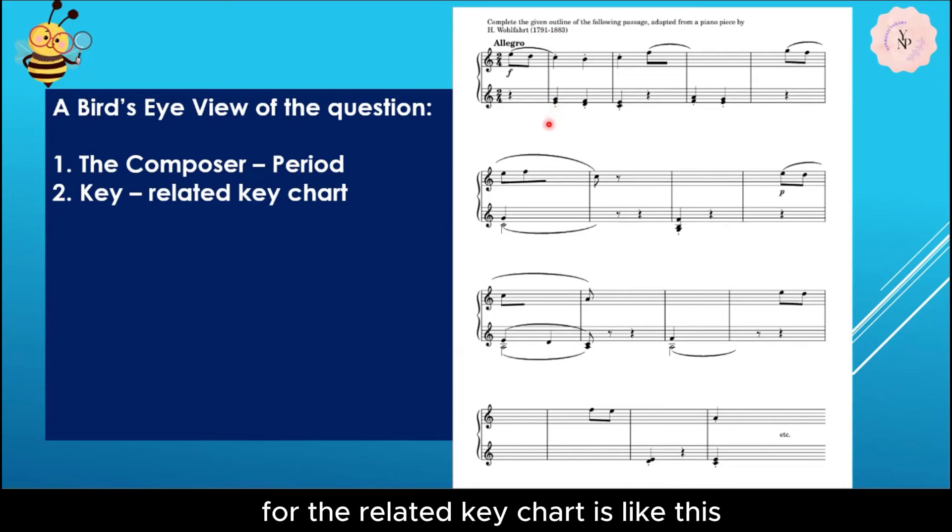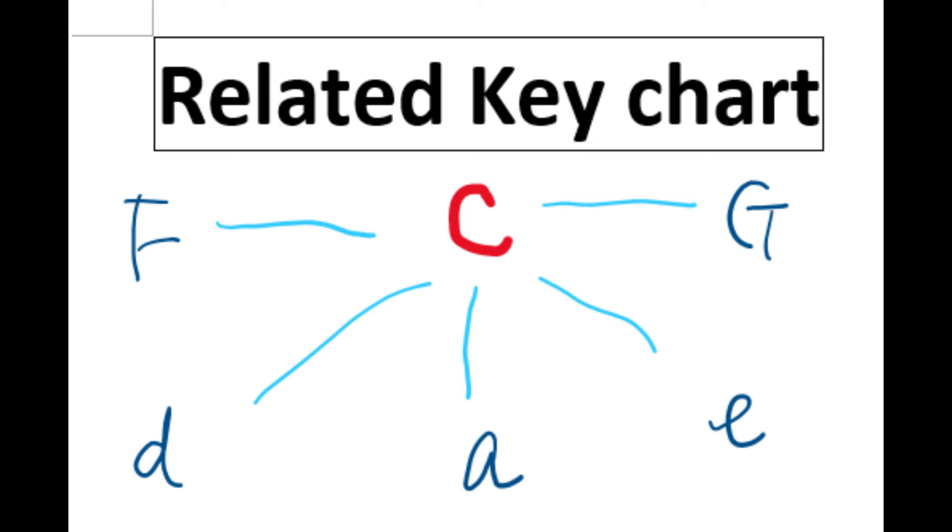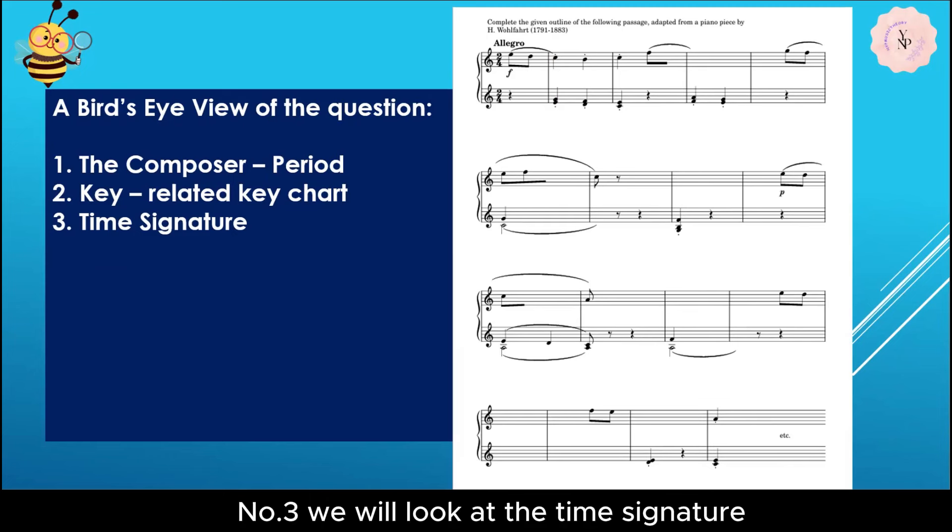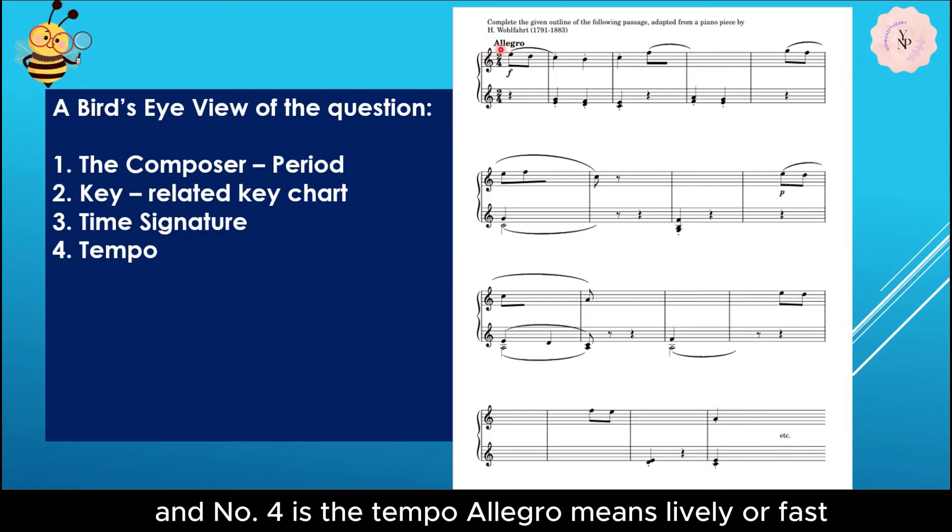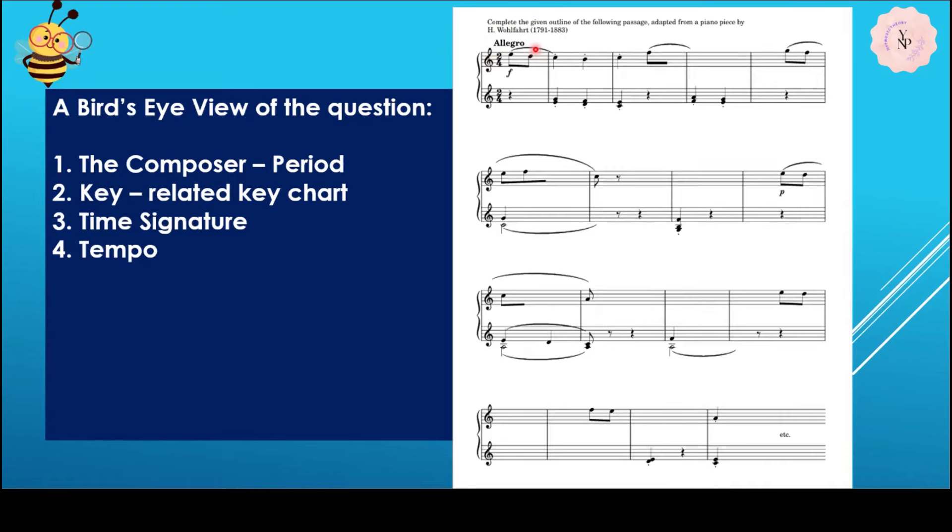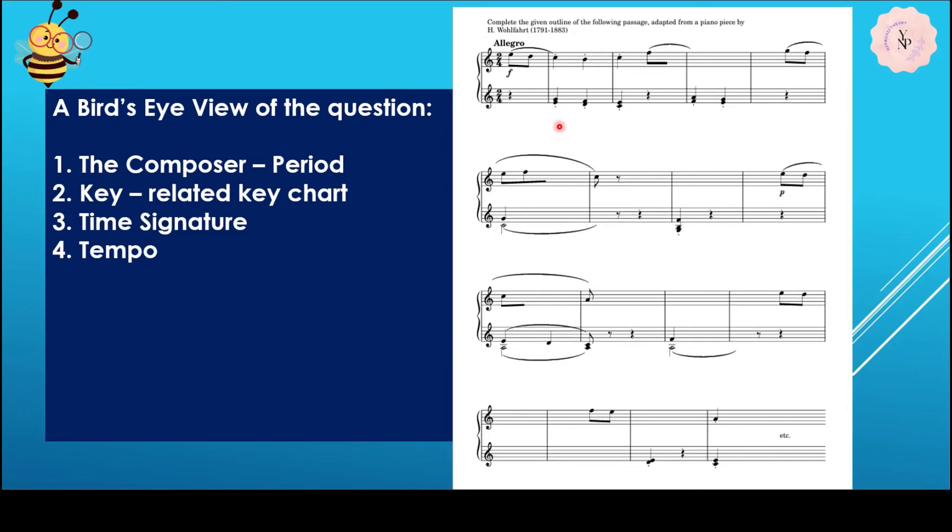As we look further to the first chord, it's C E G, so we can confirm this is in C major. Number three, we will look at the time signature. It's two-four time, means two crotchet beats in a bar. Number four is the tempo, Allegro, means lively or fast. It will affect the harmonic rhythm, either one chord per beat or one chord per bar.